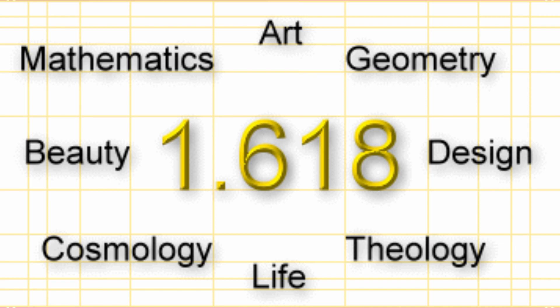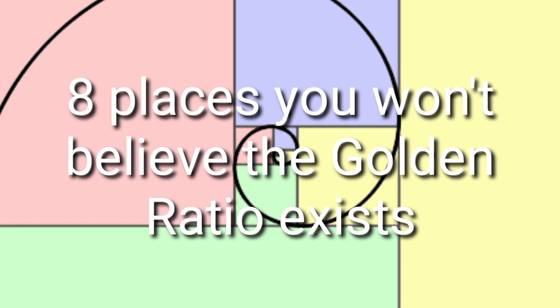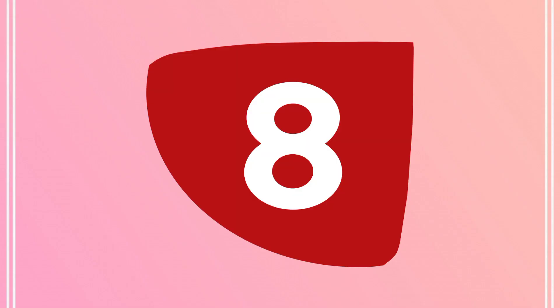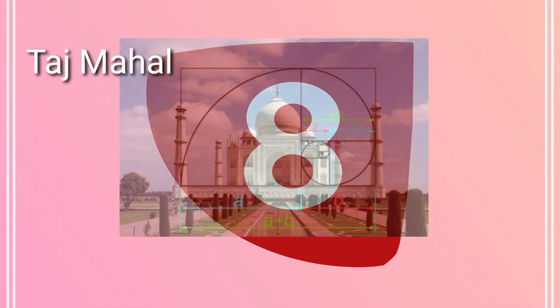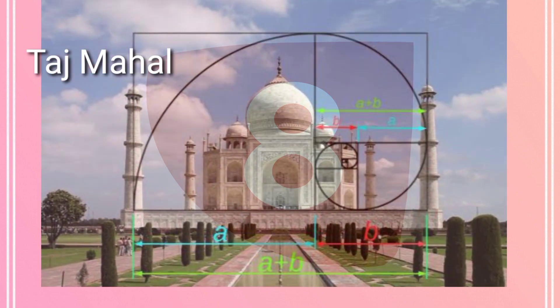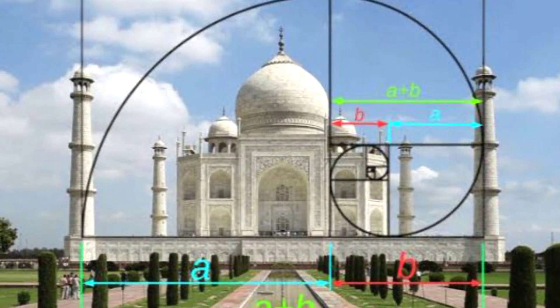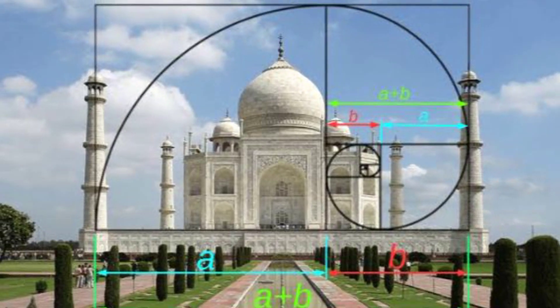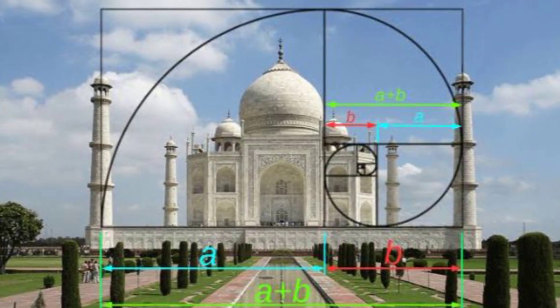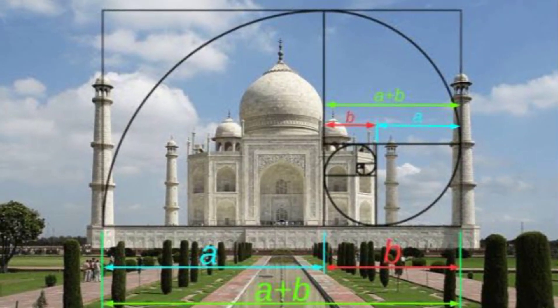It also carries mystical and esoteric values. Here are the eight places you won't believe the golden ratio exists. Number eight: the Taj Mahal. Located in Agra, India, the Taj Mahal is India's most well-known structure. It was built by Shah Jahan in 1653 to serve as a memorial to his third wife, Mumtaz Mahal.